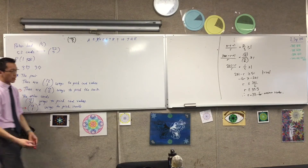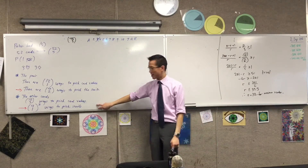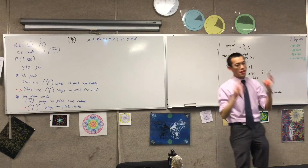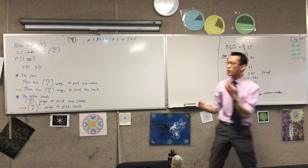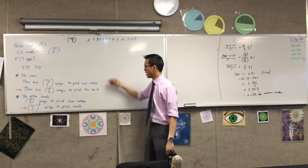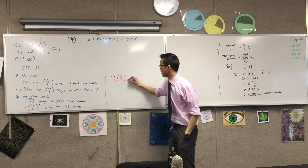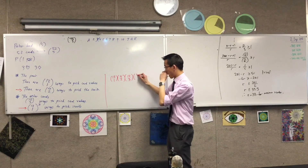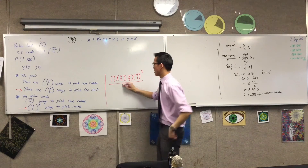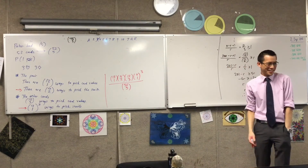That was all the work — I've got all the pieces now. I need the pair and the other cards, so I multiply four numbers together. The favorable events give the probability: 13C1 × 4C2 × 12C3 × (4C1)³ over 52C5. I have no idea what that numerical value is.